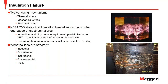Our main concern with insulation is insulation failure. There are three typical aging mechanisms for high voltage insulation: thermal stress, mechanical stress, and electrical stress. Although electrical breakdown is the final failure mode, electrical stress is not necessarily the dominating aging factor. It's believed that aging is dominated by thermal degradation and mechanical stress caused by vibration and switching pulses. The National Fire Protection Agency states that insulation breakdown is the number one cause of electrical failure.